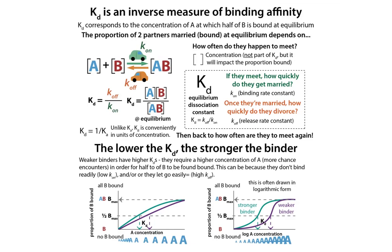An important concept in biochemistry is the equilibrium dissociation constant, KD. KD is an inverse measure of binding affinity. A lower binding affinity corresponds to a higher KD, whereas a higher binding affinity corresponds to a lower KD. So if you want a tighter binder, you want something with a low KD, and if you want a weaker binder, you want a high KD. Although often when we're designing drugs, people want to get a lower KD — but not too low, or else you get stuck on there forever.